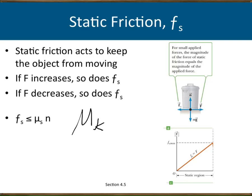If the object stands still — no motion — then we have another coefficient, mu s, which is called the coefficient of static friction. These are different because when the surfaces are in motion, their chemical interaction is different than when they are standing at rest.